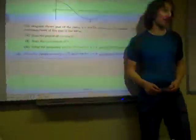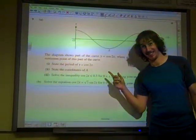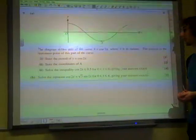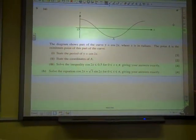Alright, so according to Summer 2011, question 9. The diagram shows part of the curve y = cos(2x). Point A is the minimum point of this part of the curve.